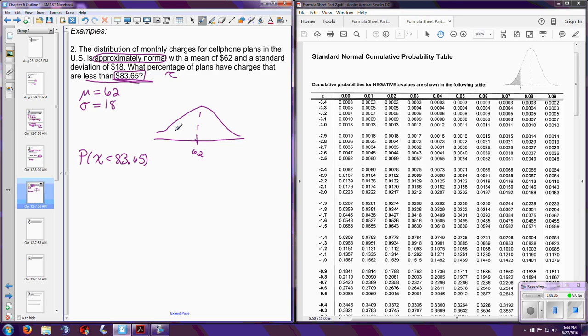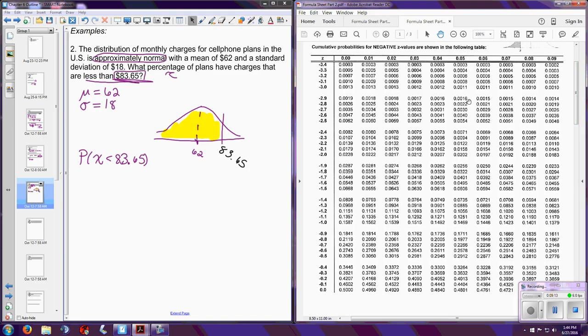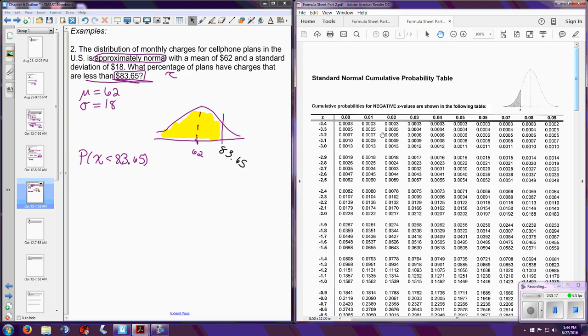They also said that this was approximately normal. Because this is approximately normal, well, what do we know about the normal curve? It follows that bell shape. So we're not grading on your art skills here, but if you know what that picture looks like, you know what to look for. Okay, in the center, I'm going to plot my mean. And then they asked us, what percent of plans have charges that are less than $83.60? That right there is asking us to find the probability that X is less than $83.65. Well, where does $83.65 fall in here? $62 is in the center, we go from low to high, so it's probably over here somewhere. Because they're asking us for less than, less than is going to be to the left of that line that we just drew.